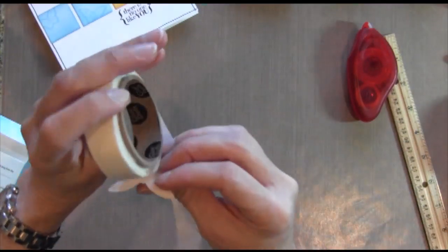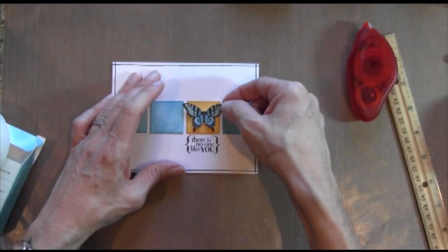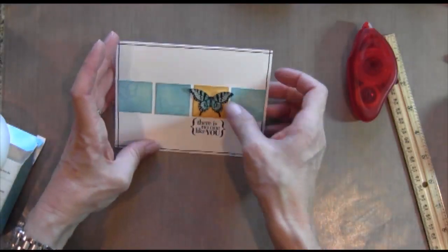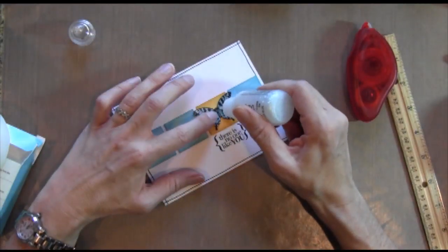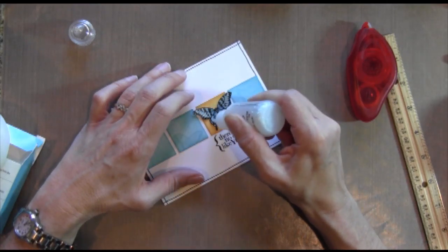And then I punch out my butterfly with a matching punch called Elegant Butterfly Punch. And the great thing about this punch is that it goes up right against the edge of the butterfly so you don't get a white edge around it. And then I just put a glue dot in the middle so that the wings can fly up. And I'm putting some stickles on it to make it even more special.